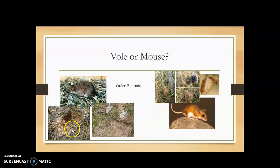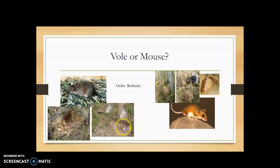Sign with voles: voles tend to scurry right under the surface, and during snowy months that's right under the surface of the snow. You'll find these little trails that voles leave under the snow when it melts, and you'll see all their tunnel system — a kind of highway system for small mammals in that subnivian environment.